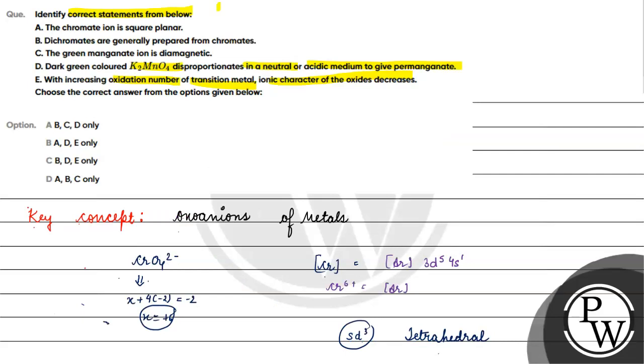Then option D: the dark green K2MnO4 disproportionates in neutral or acidic medium to give permanganate. This statement is completely correct. K2MnO4 in neutral or acidic medium gives permanganate ion.